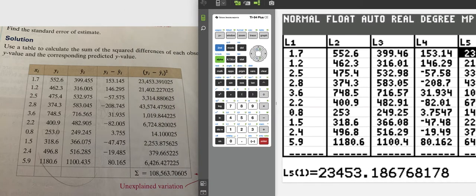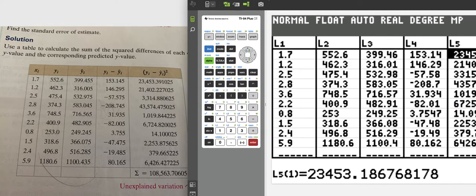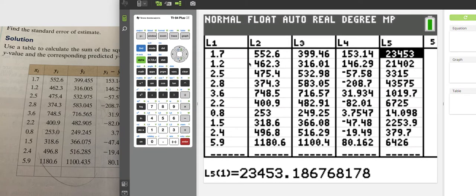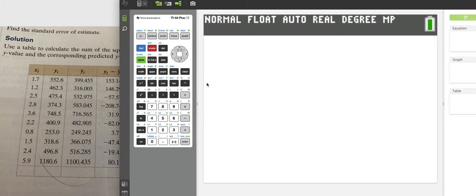That comes up with 108 point something. Next thing we want to do is the sum. How do you get the sum of a list in your stats?